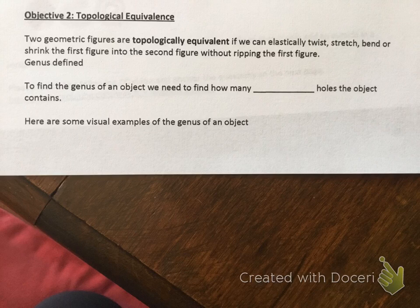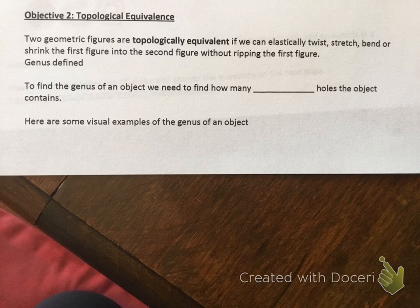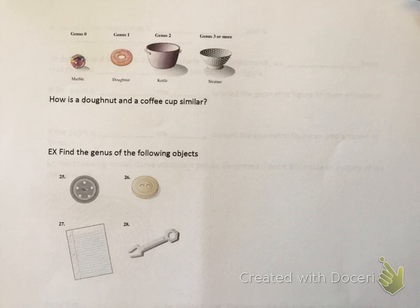Now that you've watched the Klein bottle video, the next objective is topological equivalence. Two geometric figures are topologically equivalent if we can elastically twist, stretch, bend, or shrink the first figure into the second figure without ripping it. We also need to understand what a genus is. The genus of an object defines how many through holes the object contains. For example, genus zero is a marble — no through holes.